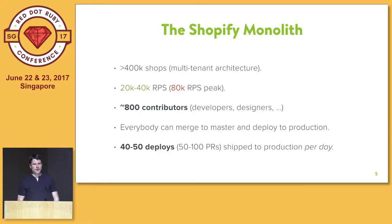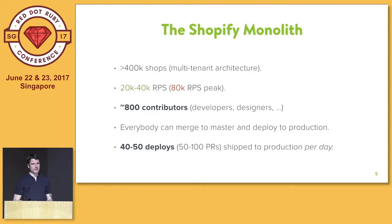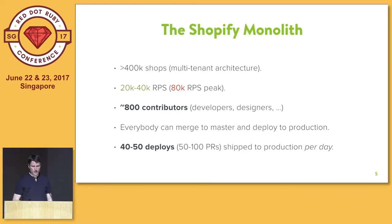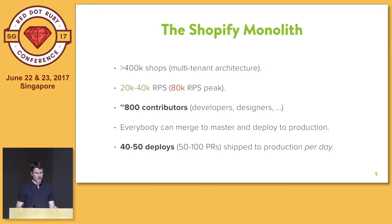Shopify is a monolithic Rails application. We run a multi-tenant architecture, which means that we host people's online stores, and we have more than 400,000 of those online stores all running in the same application, the same database, the same deployment — it's not like each shop has its own deployment. We do about 20,000 to 40,000 requests per second, and our main GitHub repository has about 800 contributors, including developers, designers, content strategists, and documentation writers.